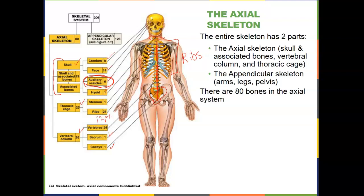So the axial skeleton is the skull, associated bones, vertebral column, and thoracic cage. The appendicular skeleton — chapter eight — is the arms, legs, and pelvis. There are 80 bones in the axial system, and yes, you do need to know them.